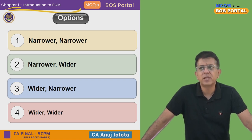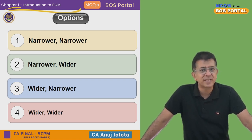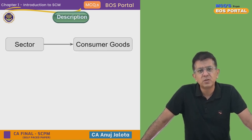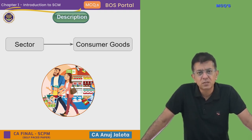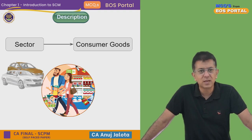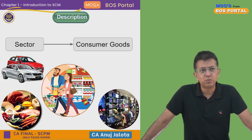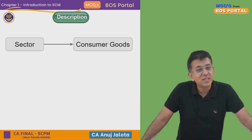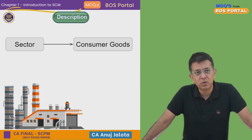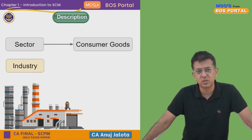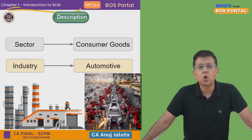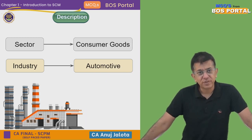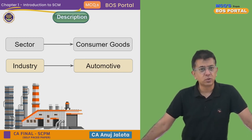Before I answer, let me give an example. Take the sector of consumer goods — it includes so many things: cars, clothes, food, and so on. It's a very wide category. Within sectors there are many industries; one such industry within consumer goods could be automotives.